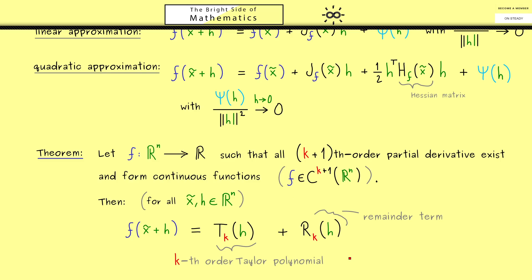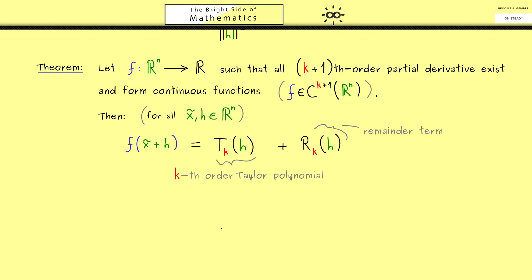However, of course still missing here is what are the formulas to calculate both terms here. And now the good thing is, they also look completely analogous to the things we already know. More precisely, the Taylor polynomial can be written as a sum over all derivatives up to the kth order. And there you might already guess, we can summarize them with the multi-index notation. So here we have the differential operator D^α, where α is a multi-index. In other words, here we need the partial derivatives of f at the expansion point x tilde.